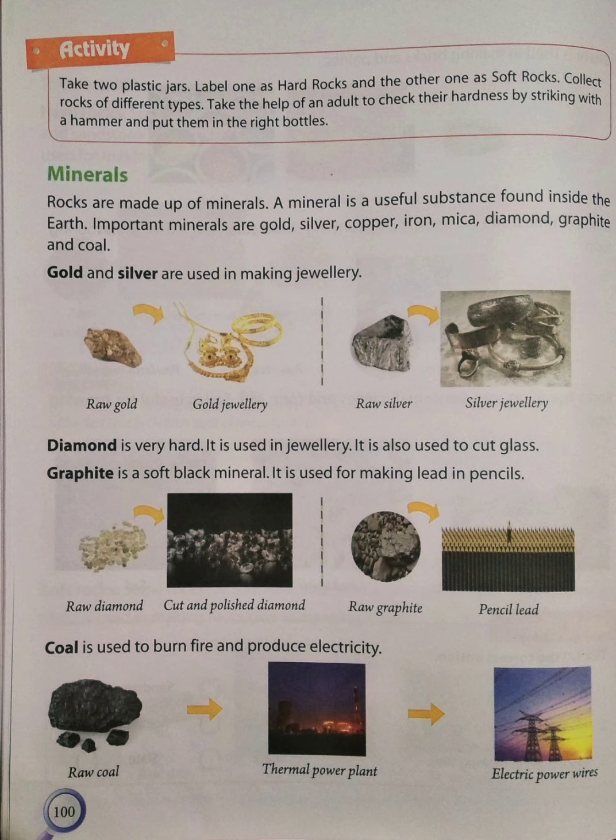Graphite. Graphite is a soft black mineral. We can see it in the lead of a pencil. It is used for making the lead in pencils.